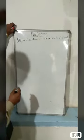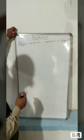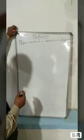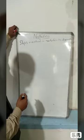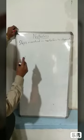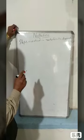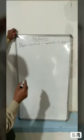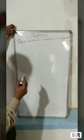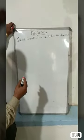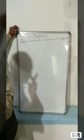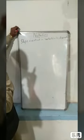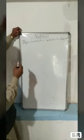In our previous lecture we discussed nutrition in animals. On the basis of food habits, animals have been divided into three categories: herbivores, which are plant-eating animals; carnivores, which are flesh eaters; and omnivores, which are both plant eaters and flesh eaters. Now we are discussing today the steps involved in nutrition in animals.